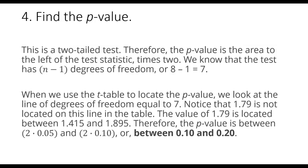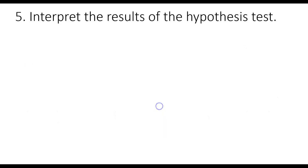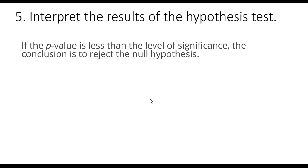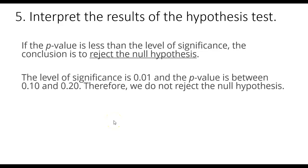Now that we have a general value of our p-value, we can use that to find the results and interpret our hypothesis test. Remember that if the p-value is less than the level of significance, the conclusion is to reject the null hypothesis. So in our case, our level of significance is 0.01, and the p-value is between 0.1 and 0.2. Therefore, we do not reject the null hypothesis because our p-value is bigger than our level of significance.